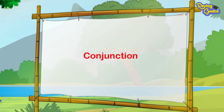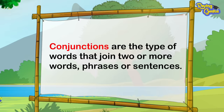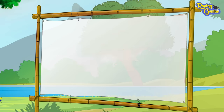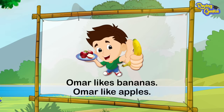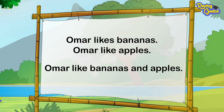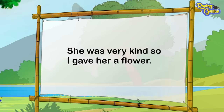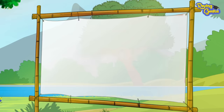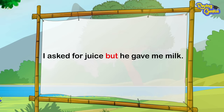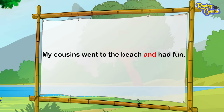Now comes conjunction. Conjunctions are the type of words that join two or more words, phrases, or sentences. For example, Omar likes bananas. Omar likes apples. Instead of saying two sentences separately, we can join them by the word and: Omar likes bananas and apples. Some more examples: bread and milk. Tom and Jerry. She was very kind, so I gave her a flower. I asked for juice, but he gave me milk. My cousins went to the beach and had fun.